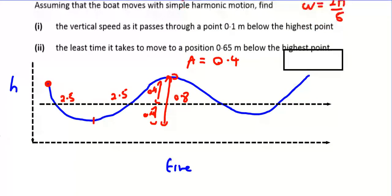So far the information we have is T equals 5, A equals 0.4, and finally ω equals 2π over 5.